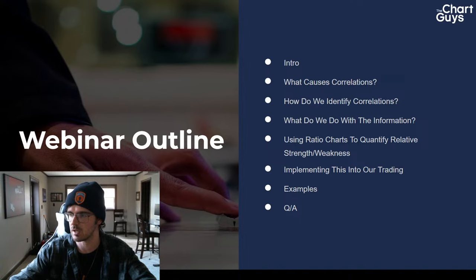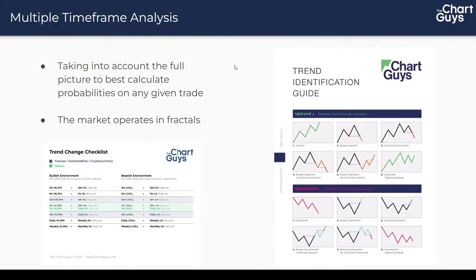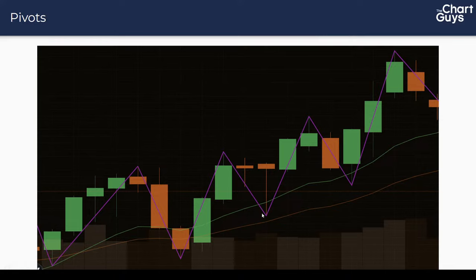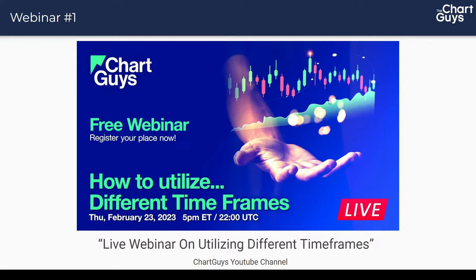The first webinar was on multiple time frame analysis — essentially taking into account the full picture of the market to best calculate probabilities on any given trade. This operates on the notion that the market moves in fractals. From that first webinar we had our trend identification guide, our trend change checklist, and nested time frame relationships — the 2-minute nested with the 15-minute, 5-minute nested in the hourly, etc. It's all based on peaks and troughs of pivots and where those are in relation to each other.